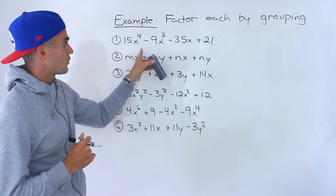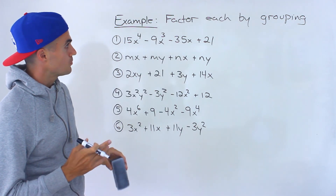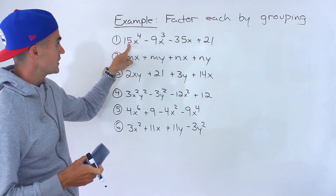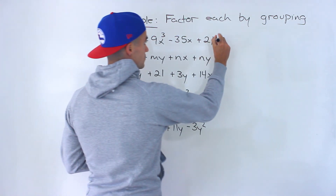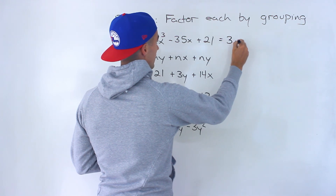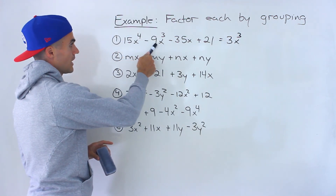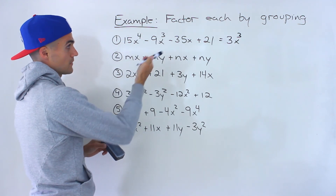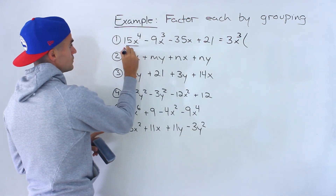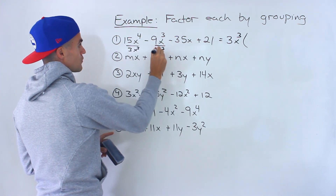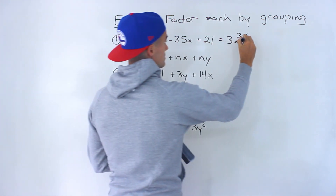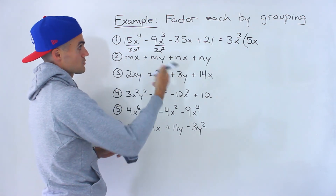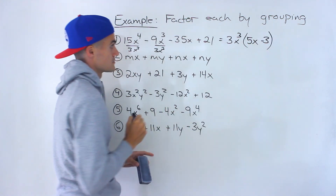Starting with number one, we got 15x to the 4 minus 9x to the 3 minus 35x plus 21. With grouping, what you do is you first factor the greatest common factor out of the first two terms: 15x to the 4 minus 9x to the 3. What we could take out is a 3x to the 3 — 3 goes into 15 and 9, and x to the 3 is the lowest exponent. When we take out 3x to the 3 and divide both terms by it, we'd get 5x minus 3.